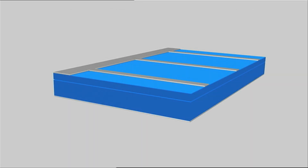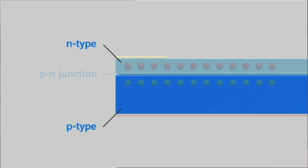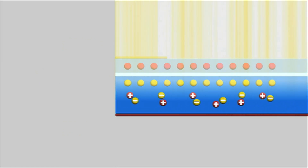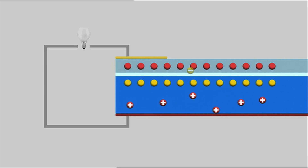The next step in solar cell production is diffusion. Here, a negatively charged phosphorus layer is added to each wafer's positively charged layer. In an oven heated to some 900 degrees centigrade, phosphorus atoms are injected with the help of nitrogen. The gaseous phosphorus-nitrogen mix is deposited on the wafer. At the interface between positive and negative charge layers, the free charge carriers created by the light are released, generating an electric current.